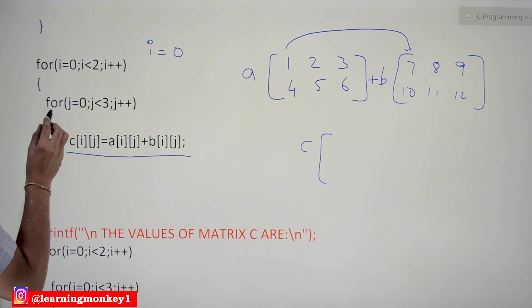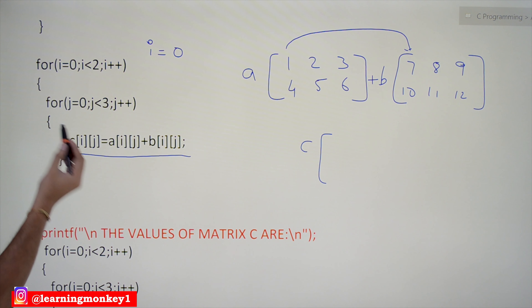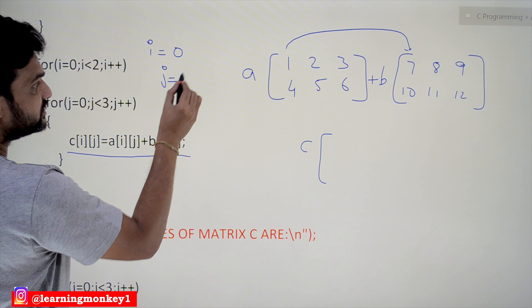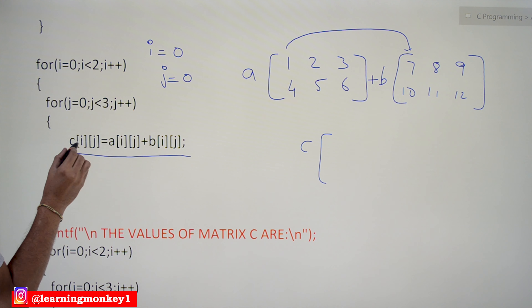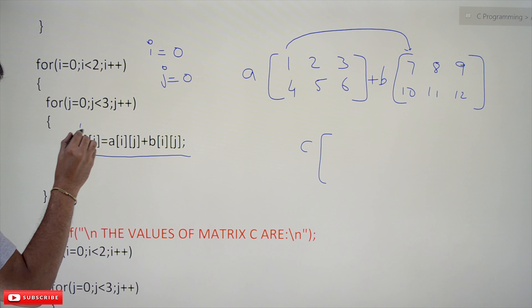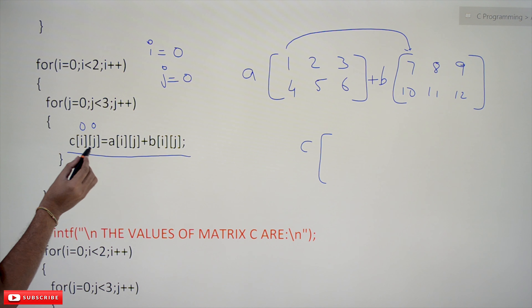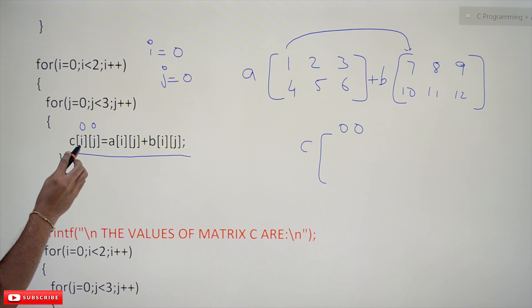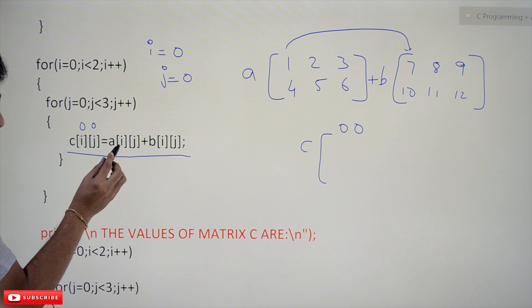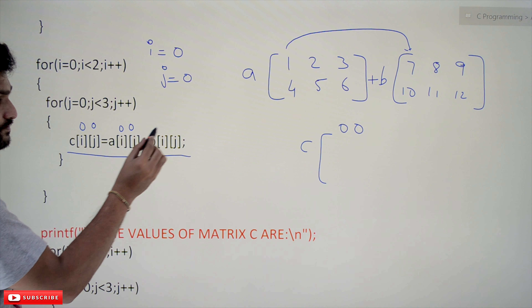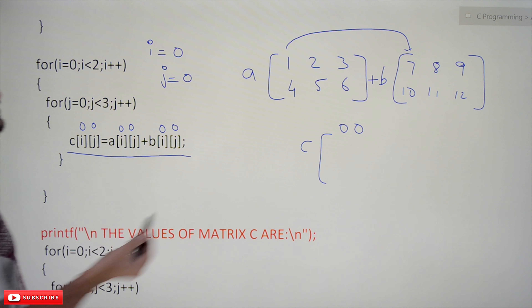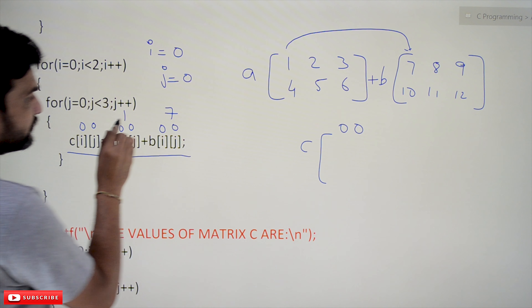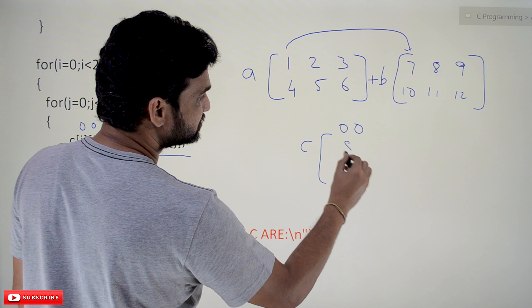In the first iteration, i equals 0 and j equals 0. So C[0][0] = A[0][0] + B[0][0]. The value of A[0][0] is 1 and B[0][0] is 7, so 1 + 7 = 8, which is placed in C[0][0].